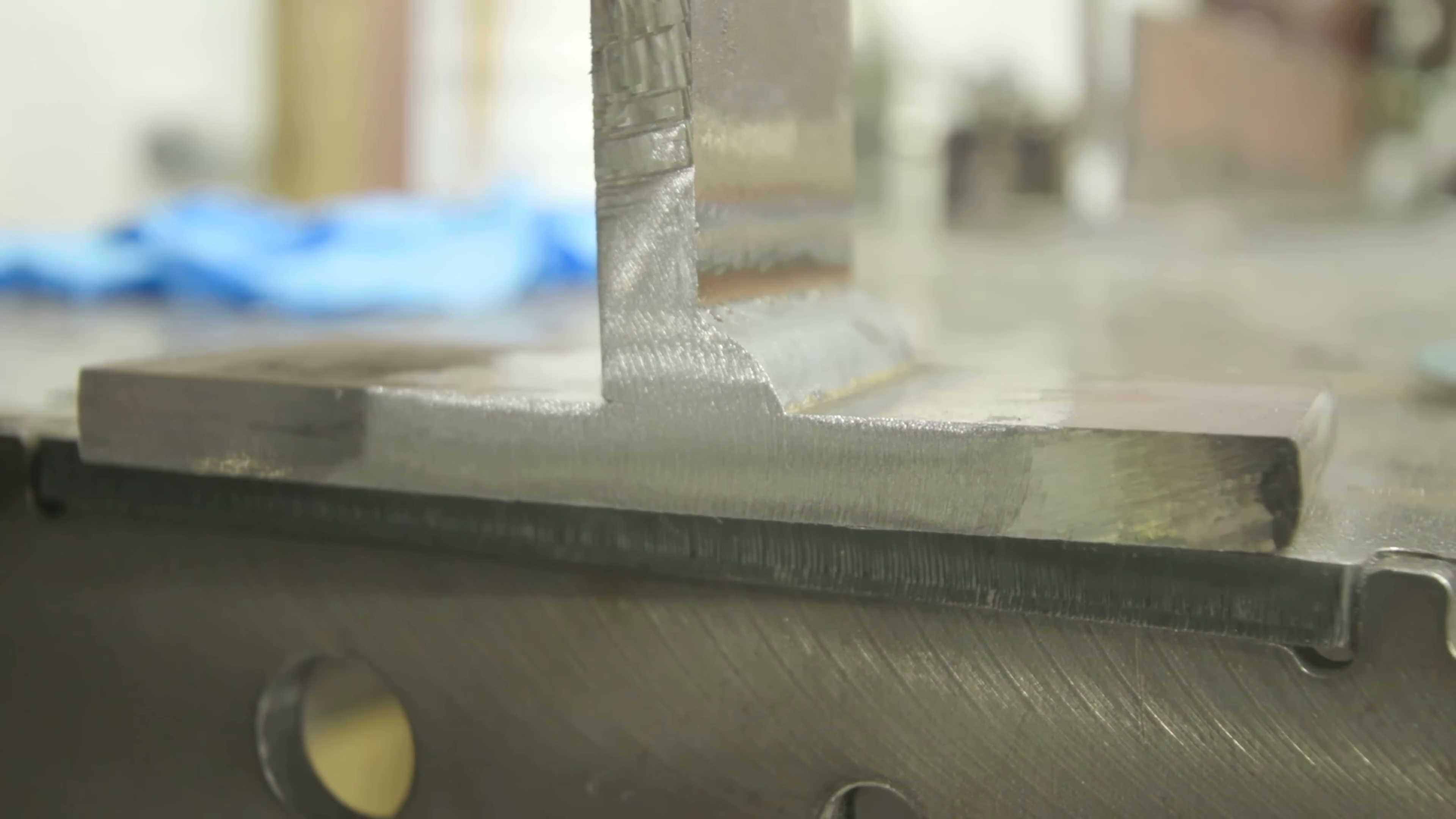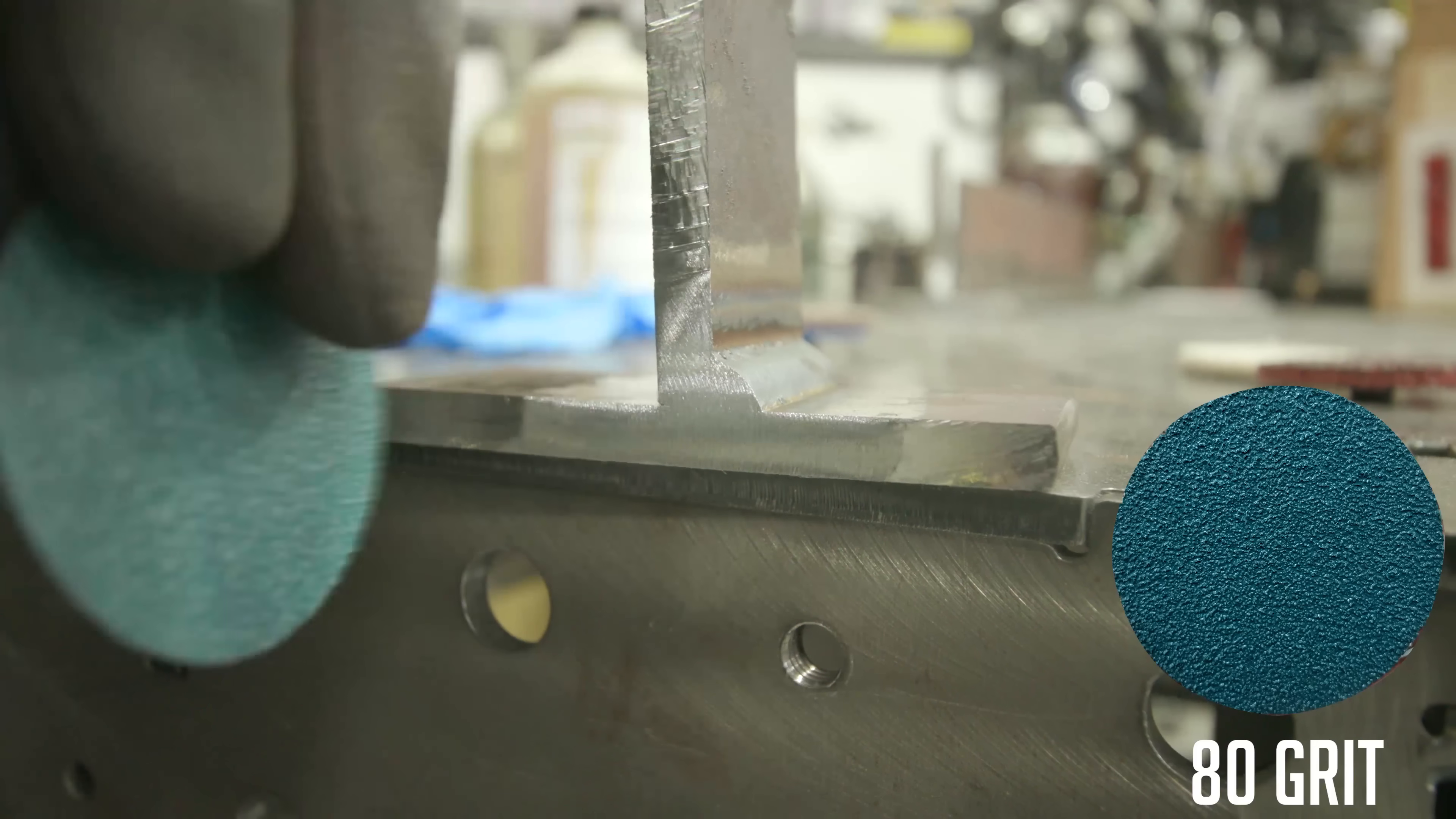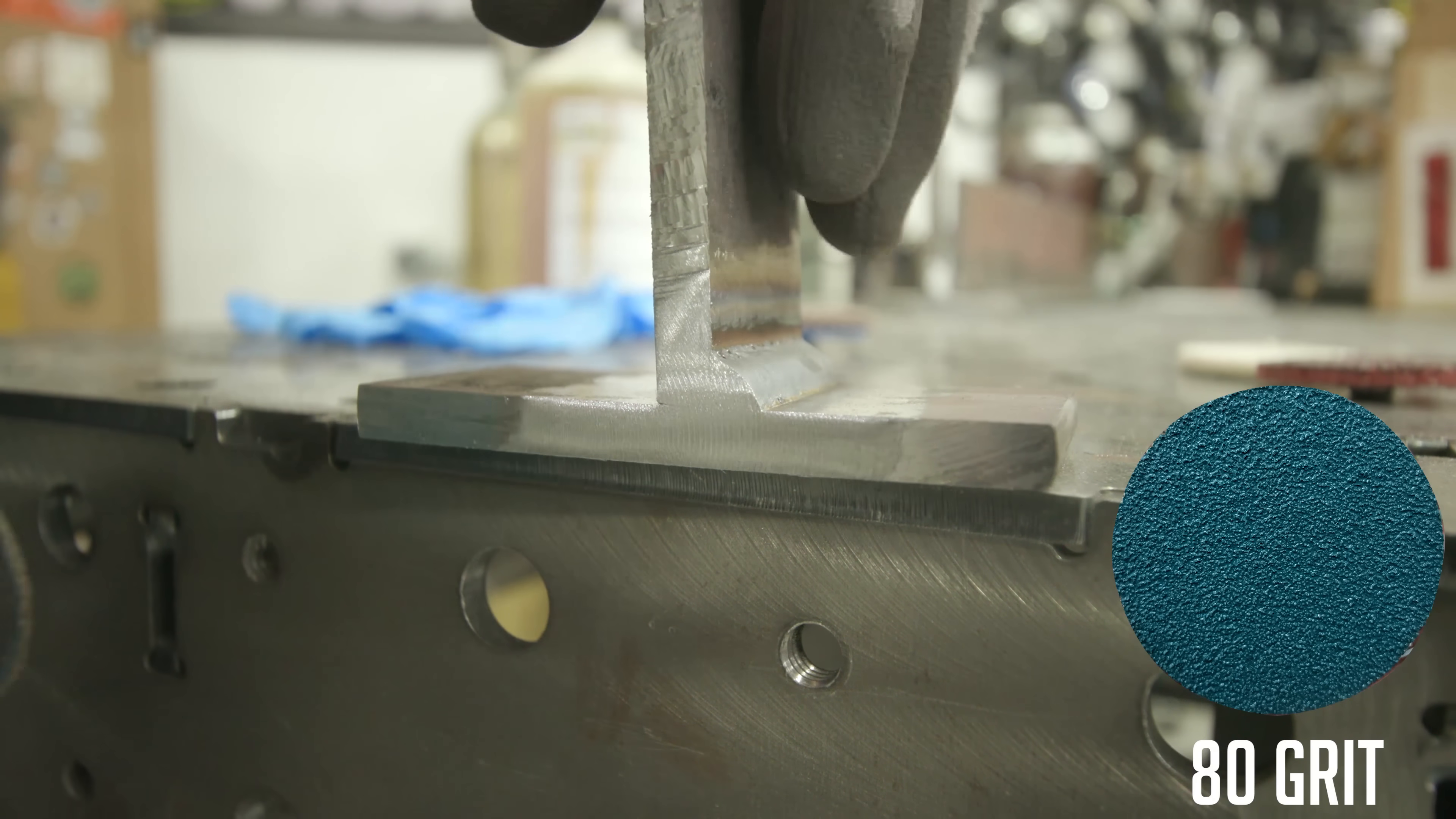So you can see it's already starting to look smoother. So now I'm going to go ahead and jump up to an 80 grit, same type of wheel, same type of pad. Just continue this on, it's not too many steps.